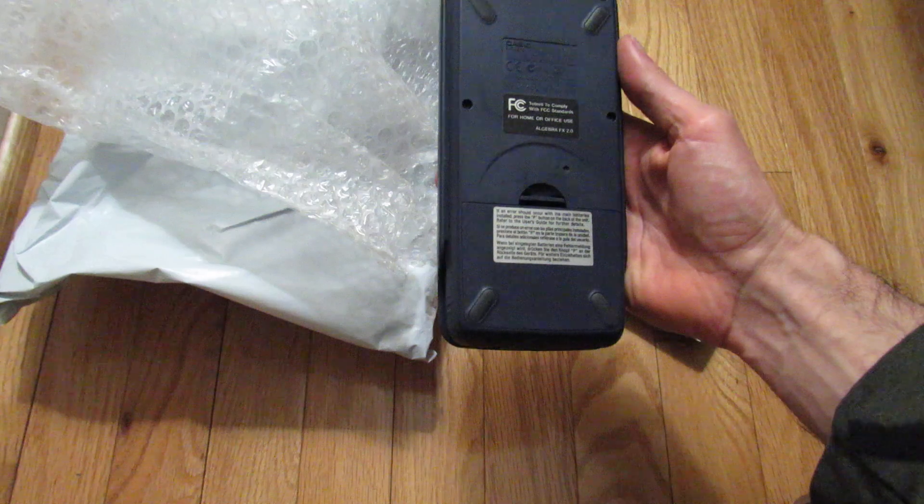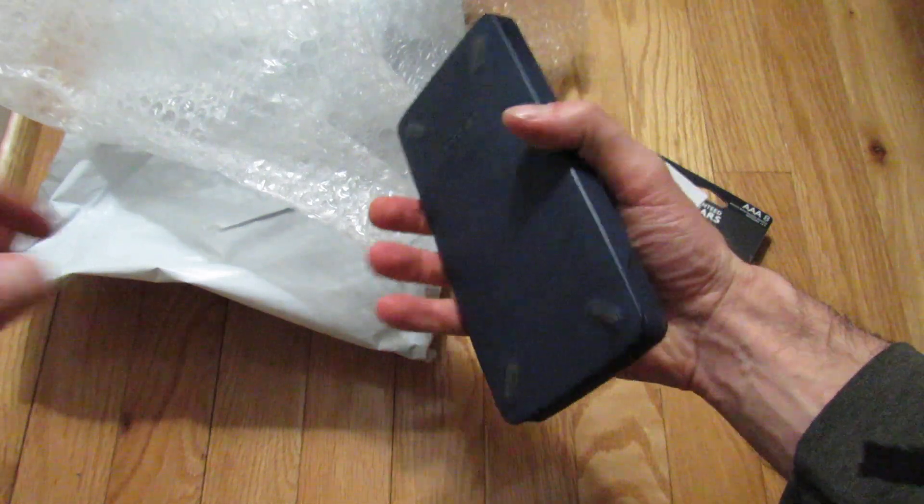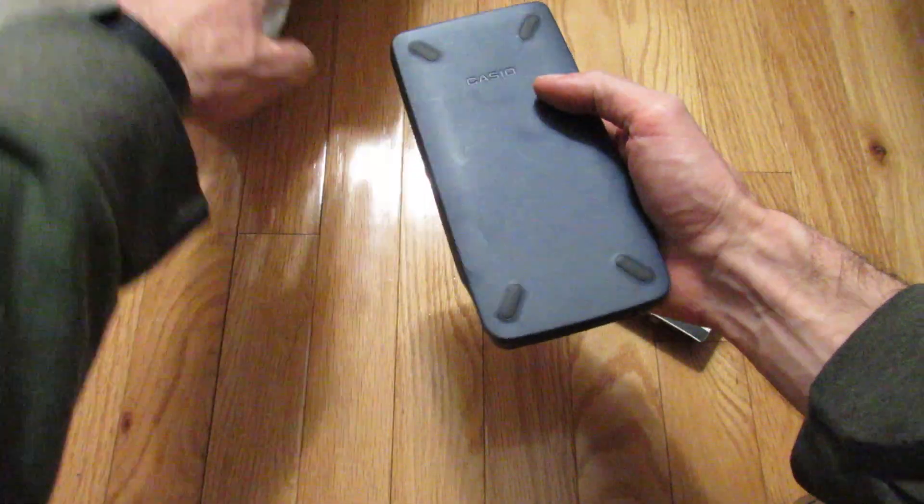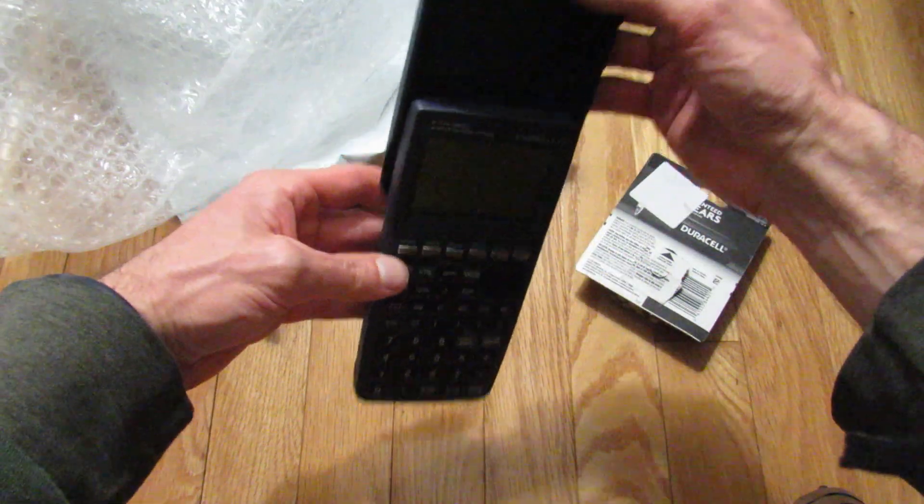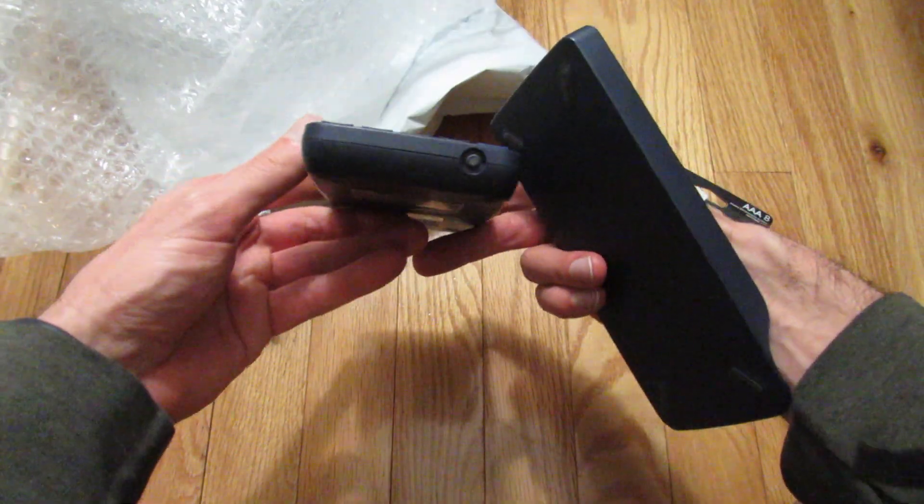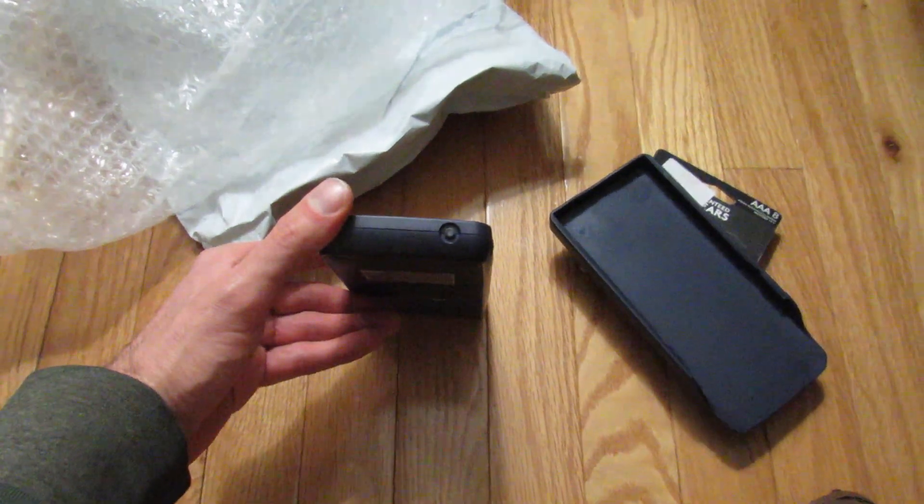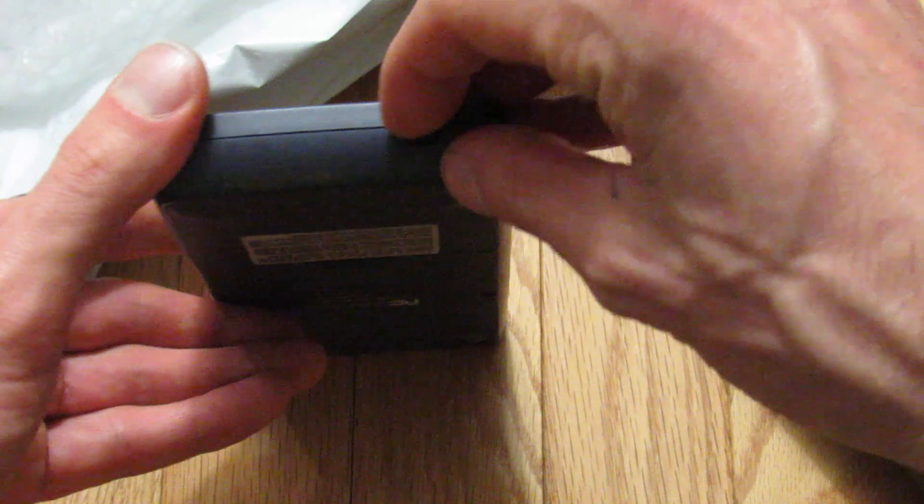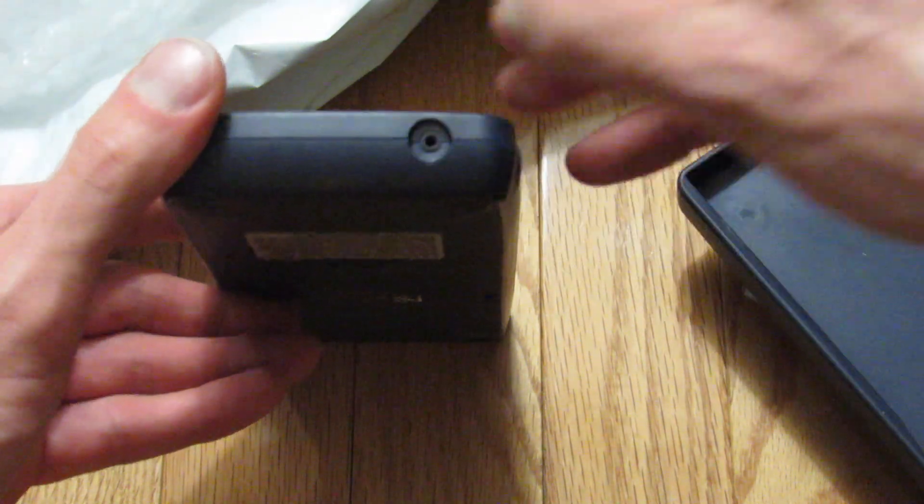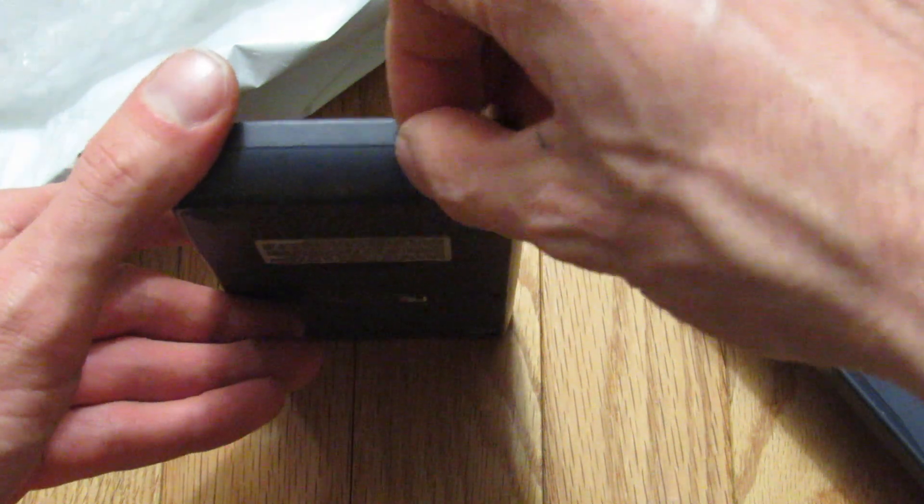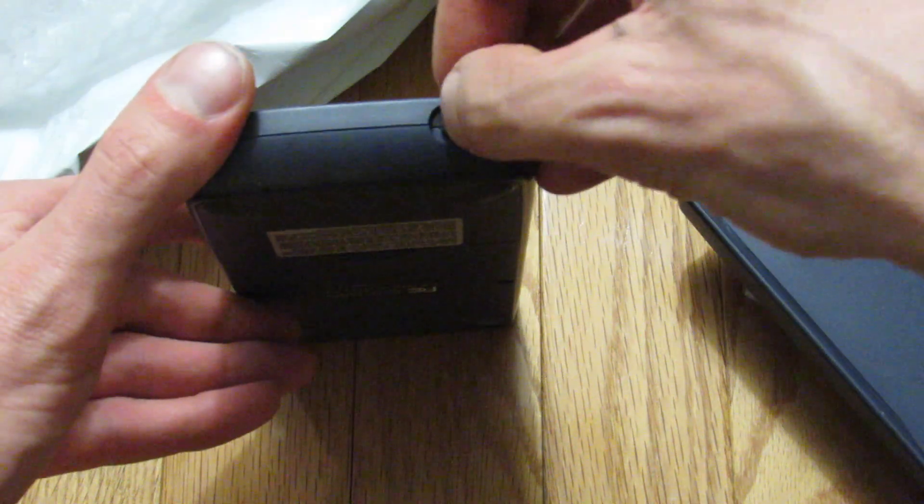And you can see we have our Casio Algebra FX 2.0 calculator right ready to go there with its 2.5 millimeter TTL serial port there on the bottom, covered up by a little plug. There we go, let's put the plug back in. It's a plug but I'm just calling it plug.